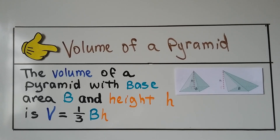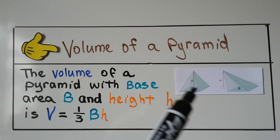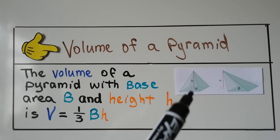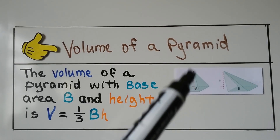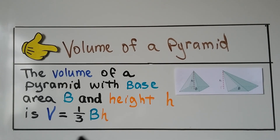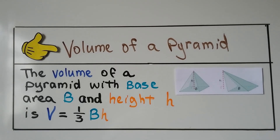For your notes: the volume of a pyramid with base area B and height h is V equals one-third times the base times the height. So the volume is a third of the base times the height.